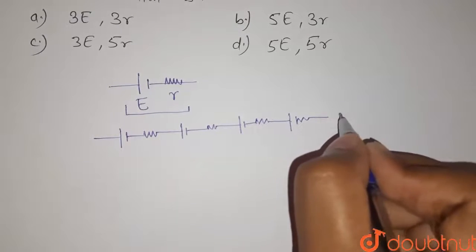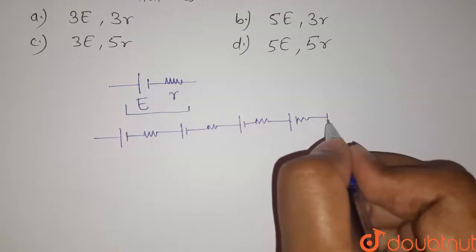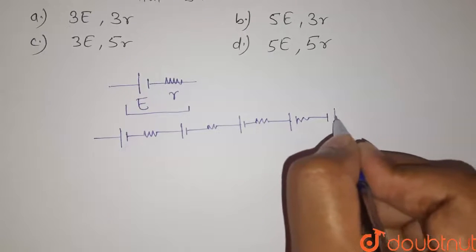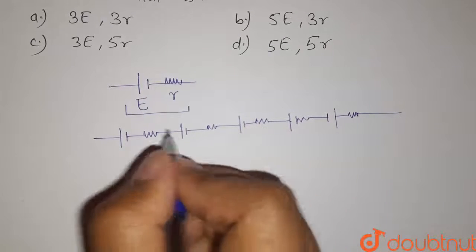This is fourth cell. And it is given that one cell is connected wrongly. That means the cell is connected in reverse order. So this is our connection here.